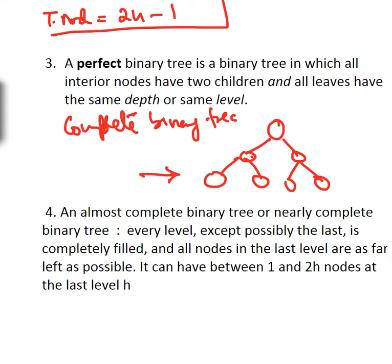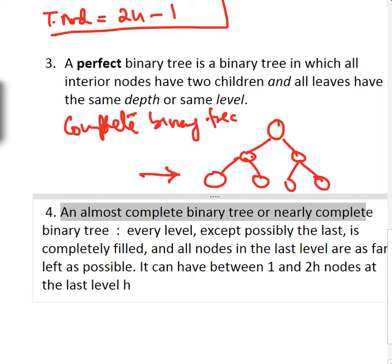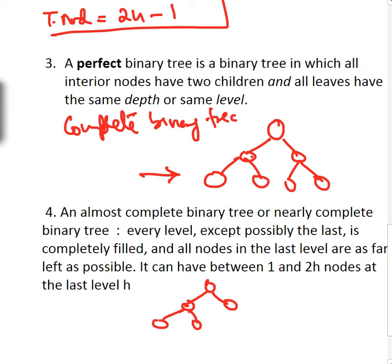An almost complete binary tree — also called a nearly complete binary tree — is one where all levels are fully filled except possibly the last level, and the last level has leaves that are left-justified. If nodes are missing, they are missing on the right side of the last level, not the left. If we fill up everything on the last level, it becomes a perfect binary tree.